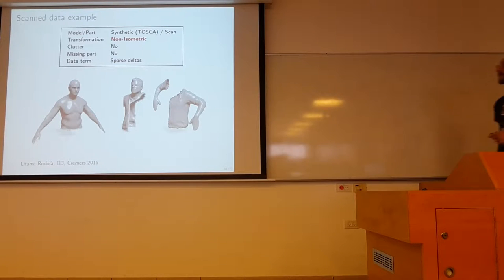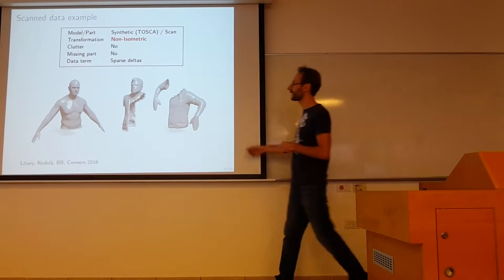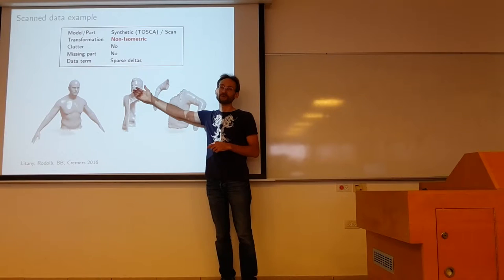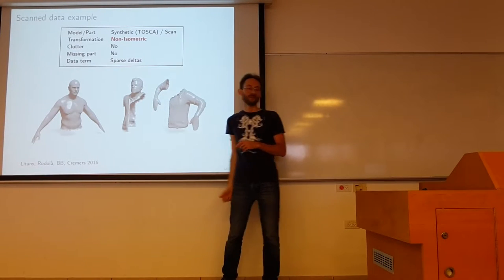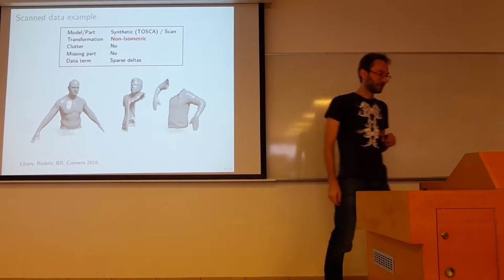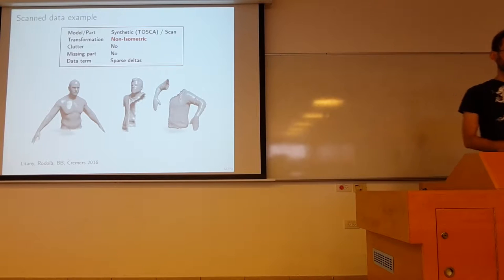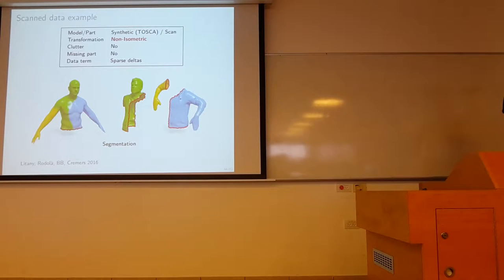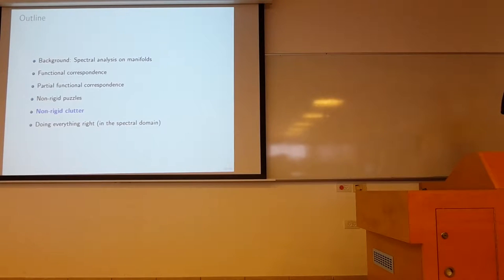And finally some results. So this is Orr that scanned himself. So you can see Orr is not here, but you could probably recognize his face from this 3D scan. So this is a case of non-isometric shape. And still it works very nicely.